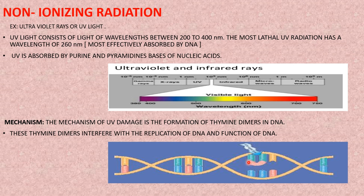Thymine-thymine dimer formation interferes with both the replication process and the function of DNA. This prevents the bacteria from replicating and stops its function, ultimately causing death of the bacteria. This is how the UV mechanism is used in the sterilization process.